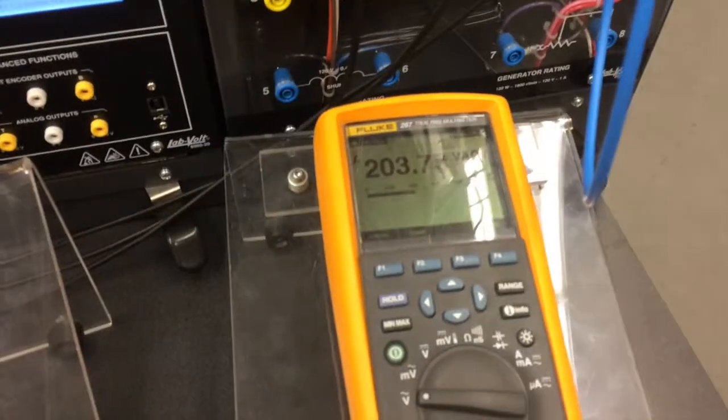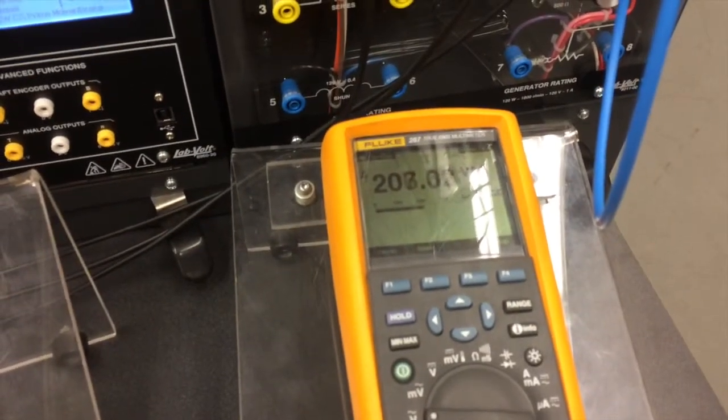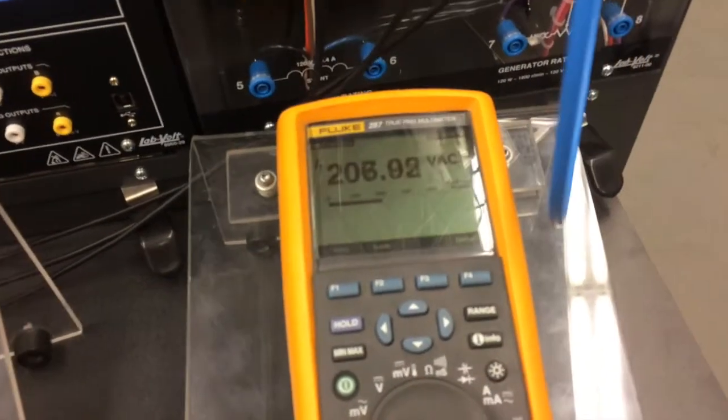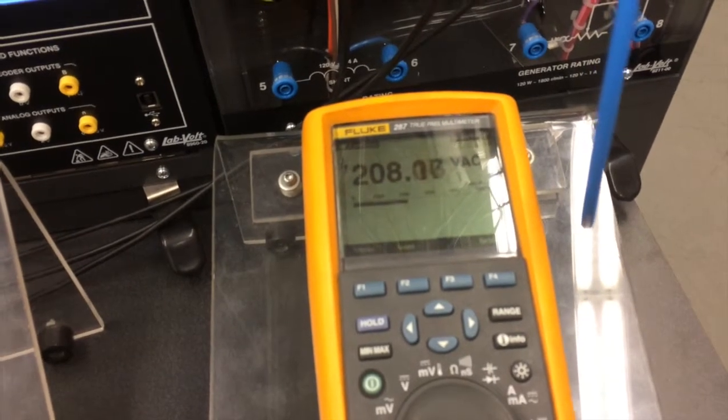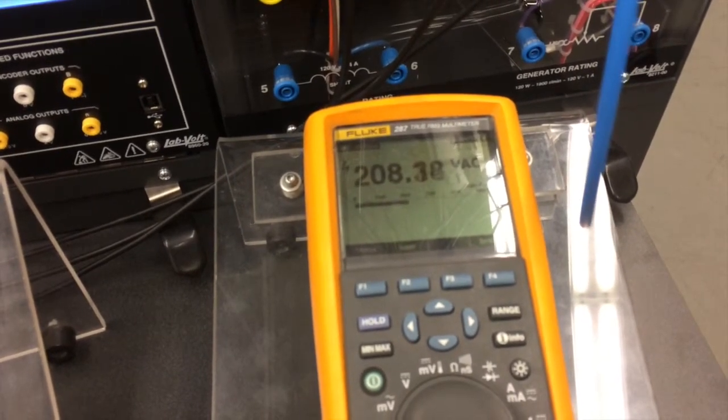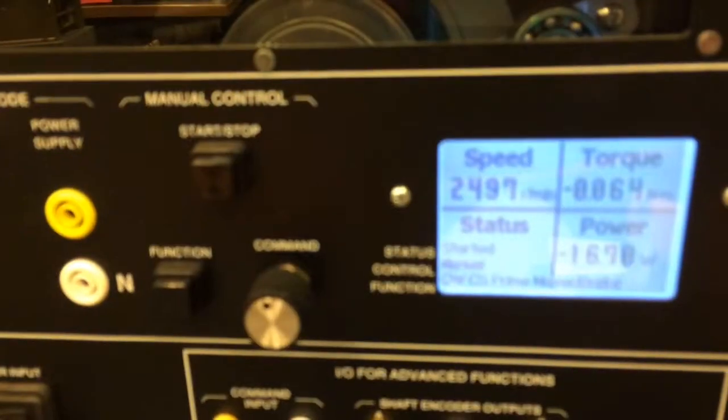If we increase the resistance, that's less current flowing to the field, which means we actually generate less voltage. But I can adjust that as well in order to bring up that voltage back to the expected 208 volts line to line.